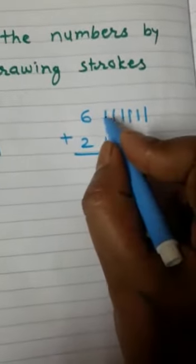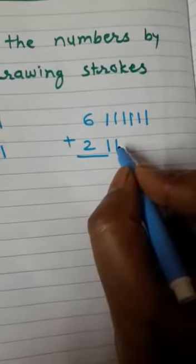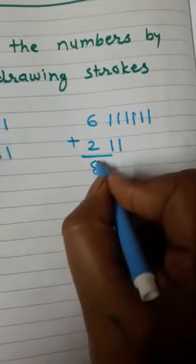Count all the strokes: 1, 2, 3, 4, 5, 6, 7, 8. Our answer is 8.